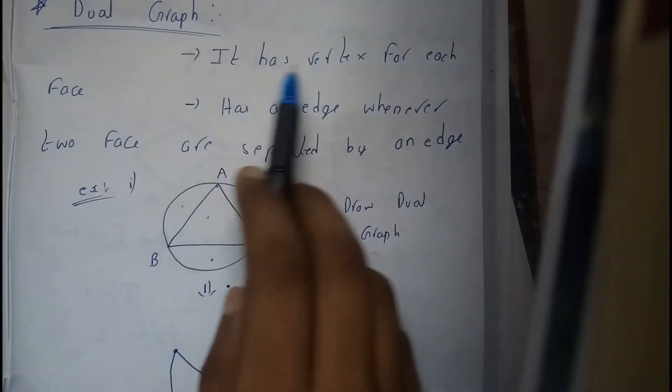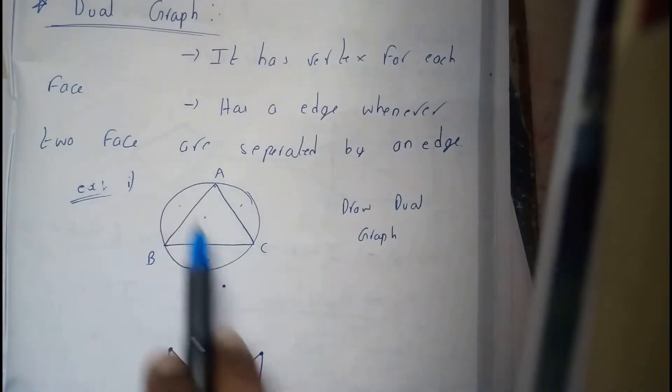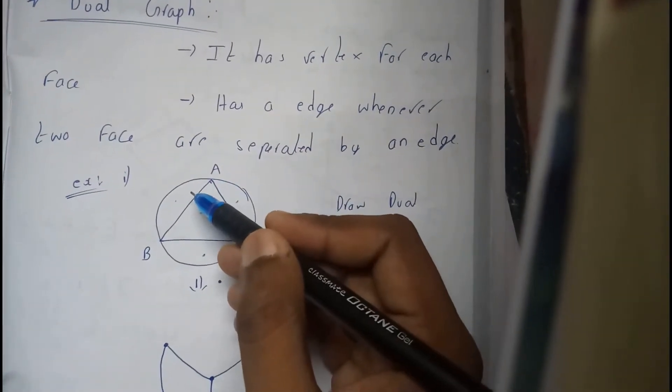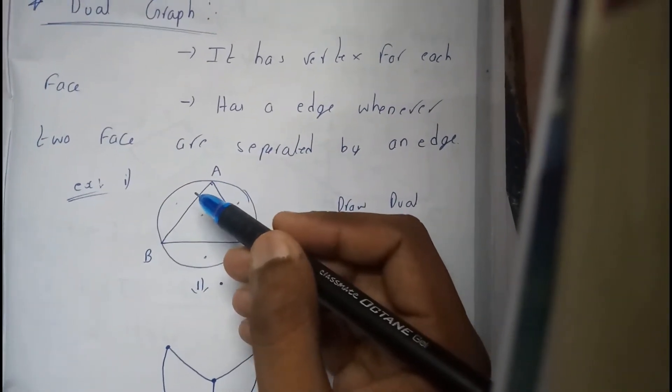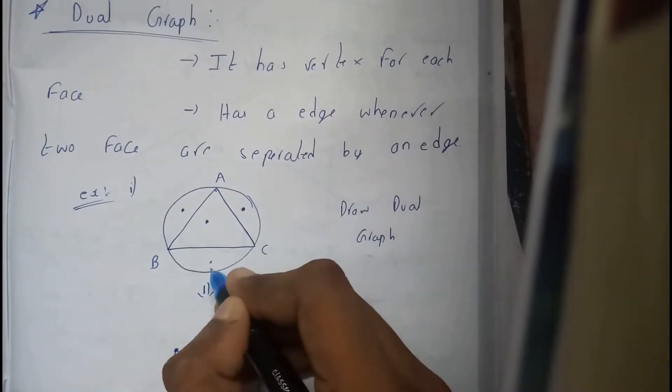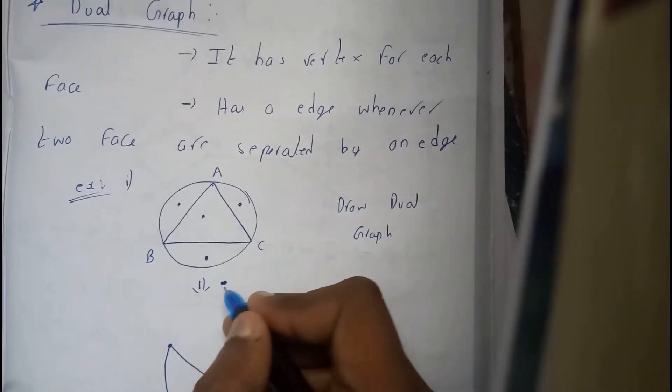Let us go through it. It has vertices for each face. If the diagram is given like this, so I think in one of my videos I have told you what is regions. So region or face, this is what called as the faces of this graph. Let us assume this as the last point.